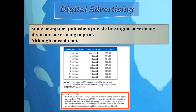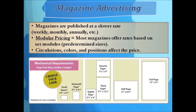Since we're on the topic of print advertising, let's also touch briefly on magazine advertising. Magazines are published at a slower rate — some weekly, some monthly, some annually — and their rates are generally higher too. Most magazines offer rates based on set modules or predetermined sizes: full page, half page, one-fourth, or one-eighth of a page. As with newspapers, circulation, color, and position also affect the price.